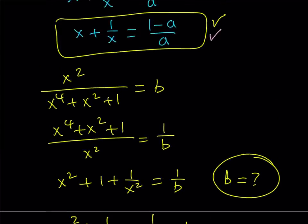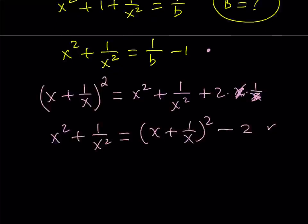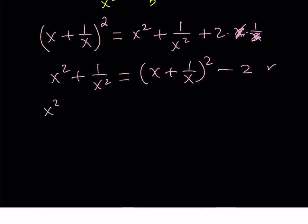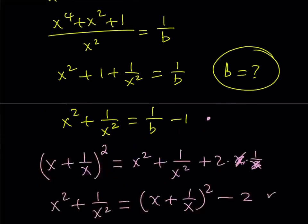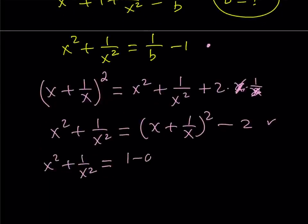So I can go ahead and substitute this. Isn't substitution awesome? I think so. So I'm going to go ahead and take this expression and then replace the x plus 1 over x with 1 minus a over a. 1 minus a over a. And then I'll square it, of course, and then subtract 2 from it. So this is equal to that, which is 1 over b minus 1.